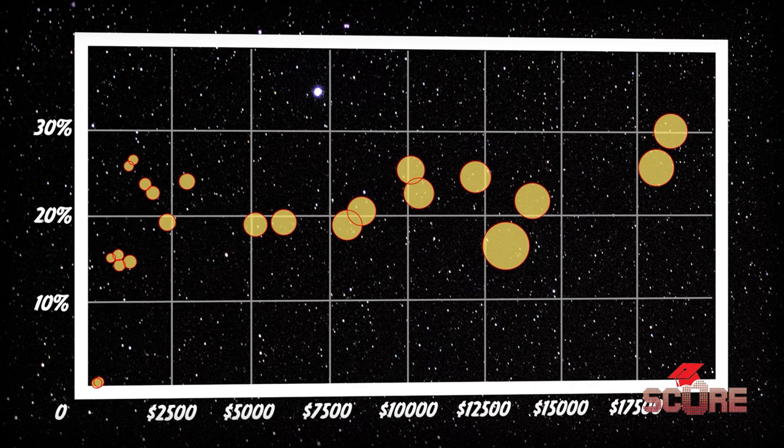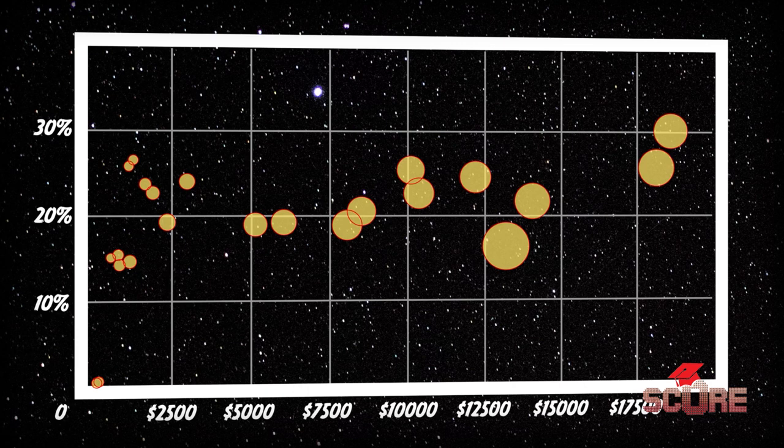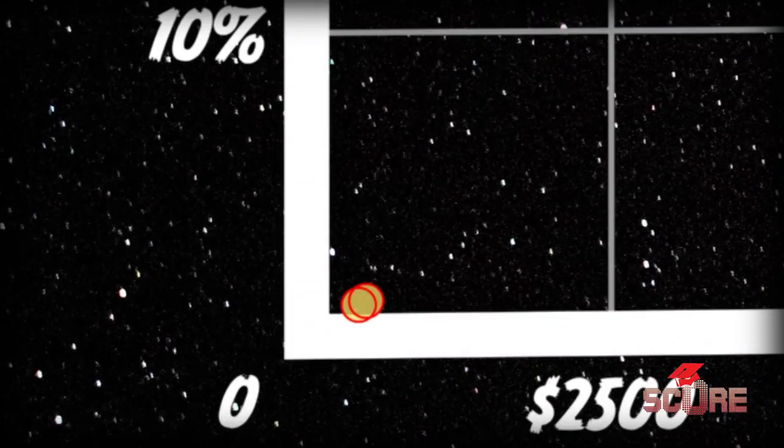Each of these bubbles is one of our 23 countries. The higher they are, the greater the percentage of GDP per capita they spend on high schoolers. The further to the right we go, the more money they spend. The size of the bubbles scales with the country's GDP per capita. Right off the bat, Guatemala and Ecuador are in bad shape.